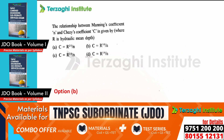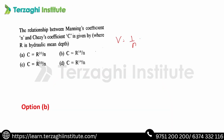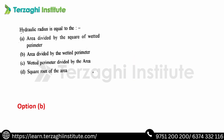The relationship between Manning's coefficient and Chezy's coefficient: Manning's formula gives V = (1/n)·R^(2/3)·S^(1/2). Chezy's formula is V = C·√(RS). So Chezy's C equals R^(1/6) divided by n, i.e., C = R^(1/6)/n. Hydraulic radius R is equal to area divided by wetted perimeter (R = A/P).